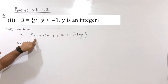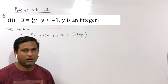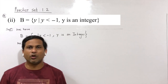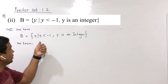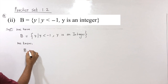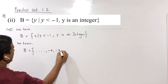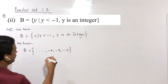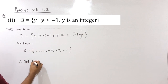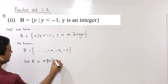Second: B = {Y such that Y is less than −1 and Y is an integer}. Integers include negative numbers, positive numbers, and 0. The condition is less than −1, so set B = {…, −4, −3, −2}. Since the dots continue infinitely, set B is an infinite set.